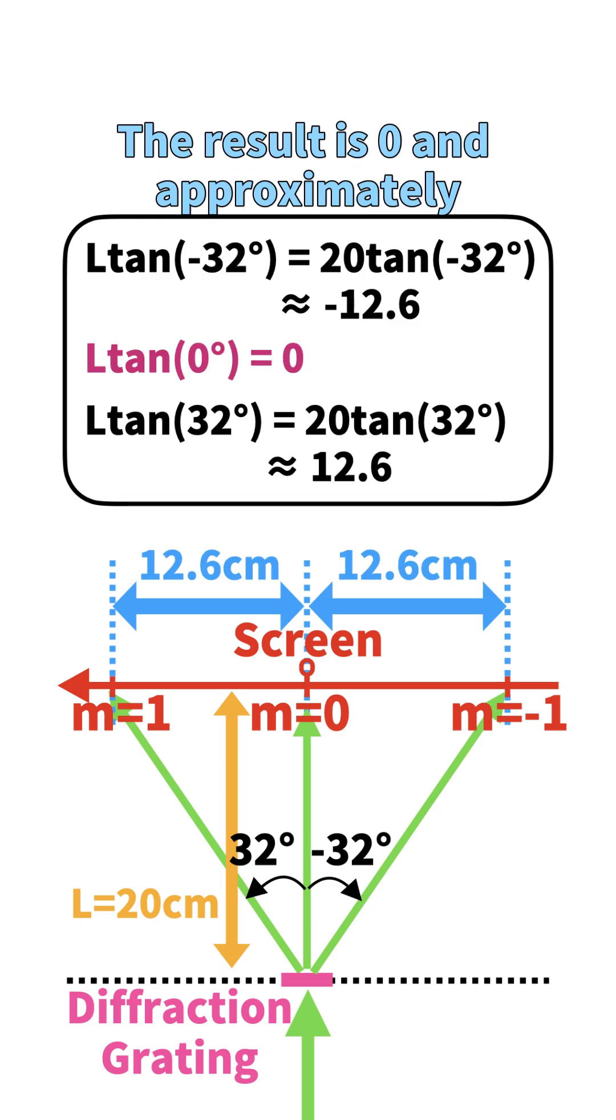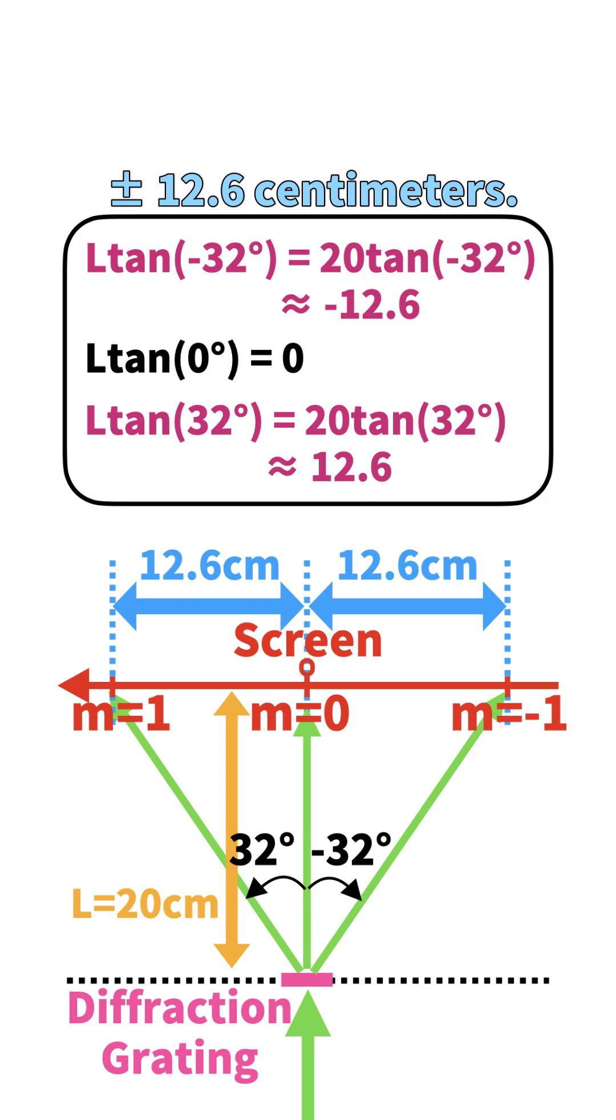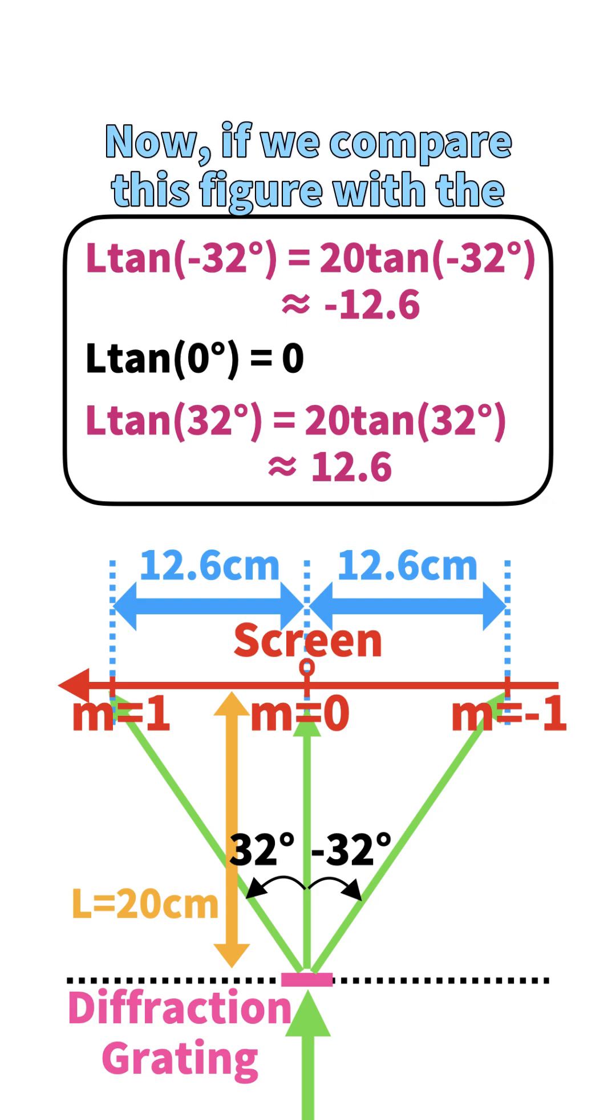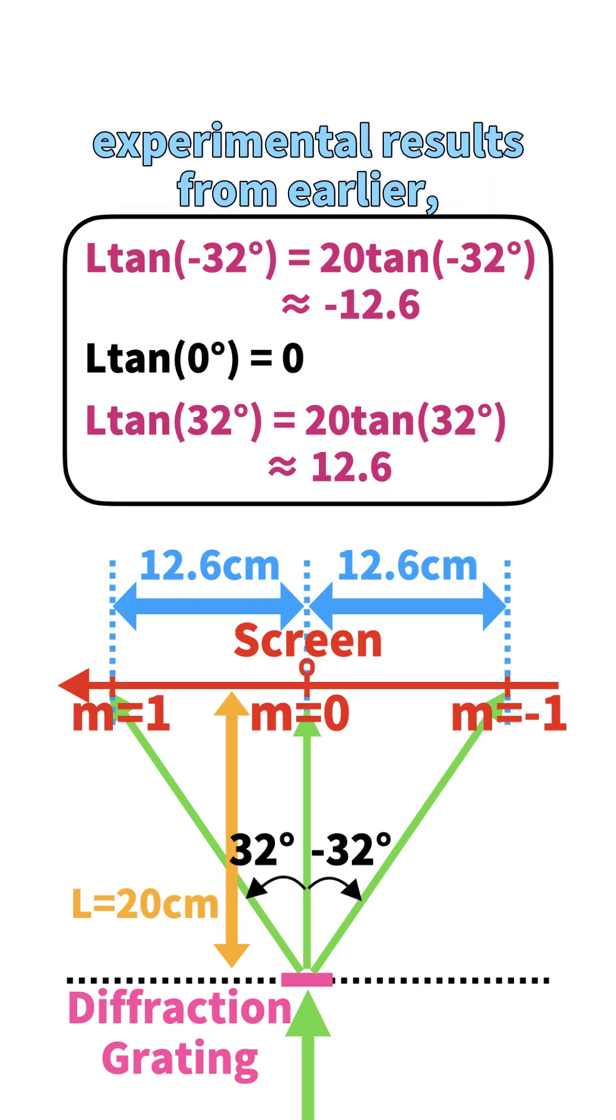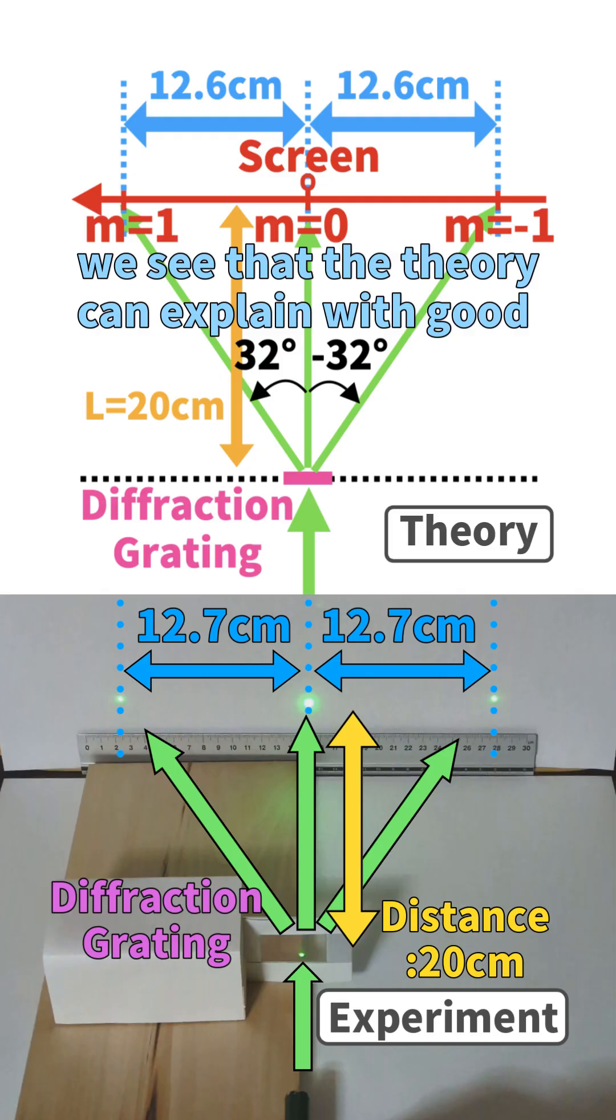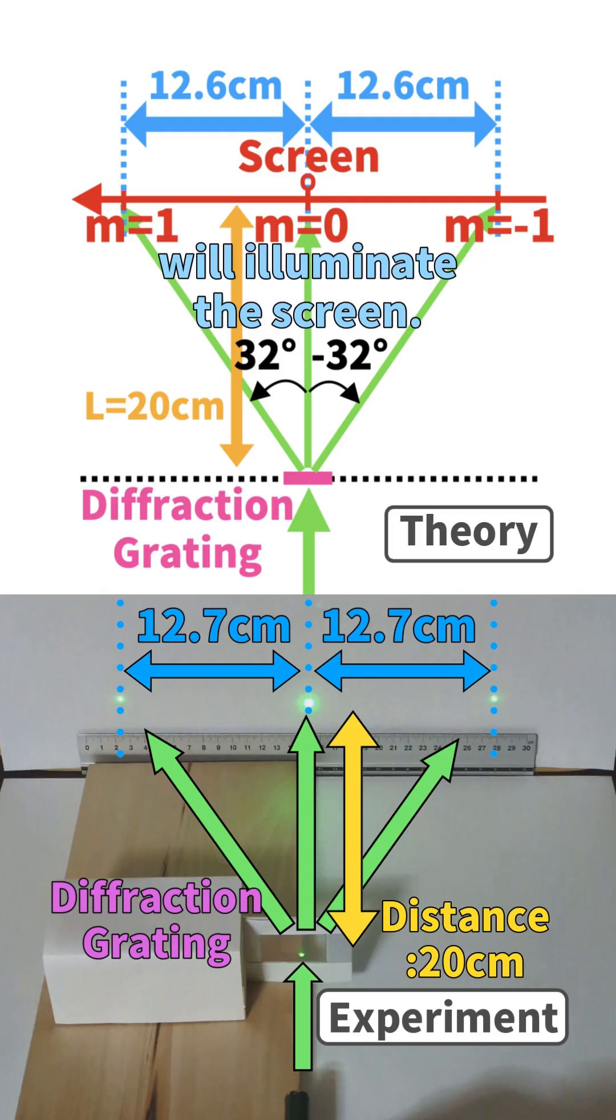Now, if we compare this figure with the experimental results from earlier, we see that the theory can explain with good accuracy where the laser light will illuminate the screen.